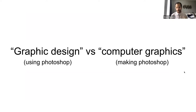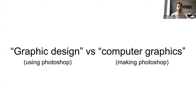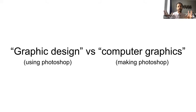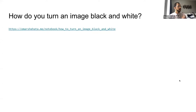A common question is: what's the difference between graphic design and computer graphics? Graphic design is more like using Photoshop — actually making digital art or manipulating photos, producing the final work. Computer graphics is a level beneath that: it's actually making Photoshop. It's writing the software that can turn an image black and white, blur an image, or dynamically generate content like a tree or door.